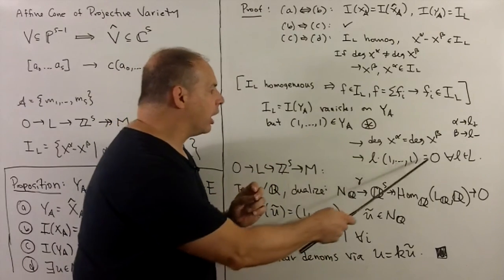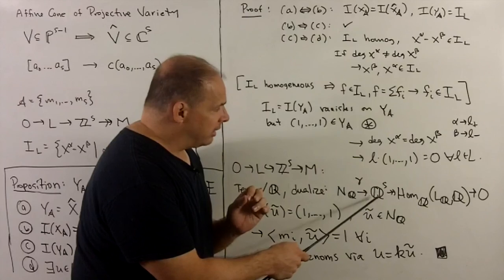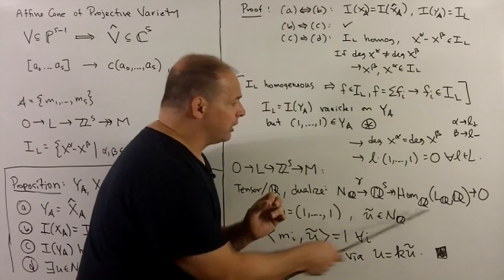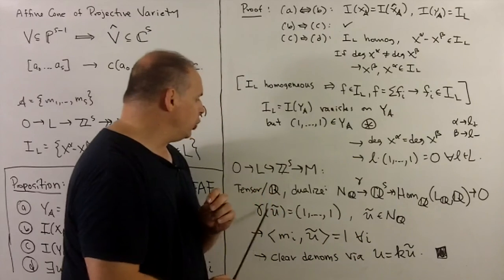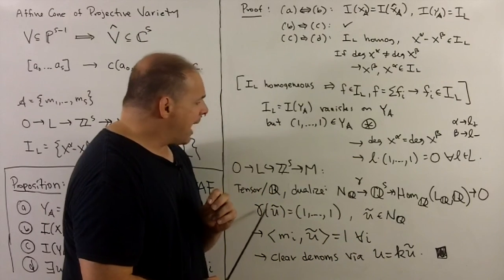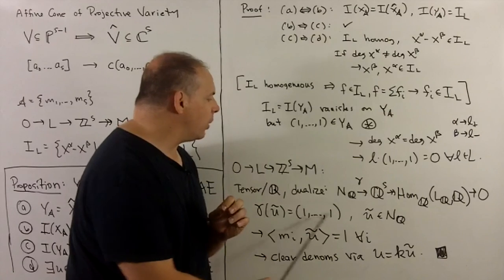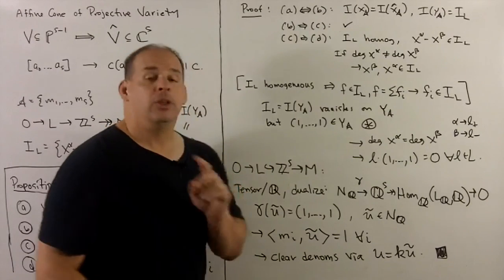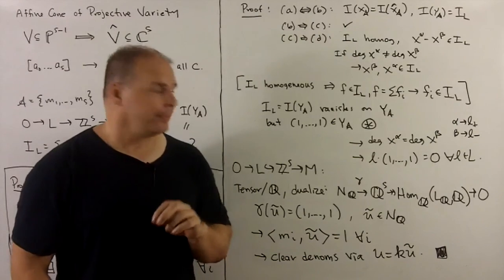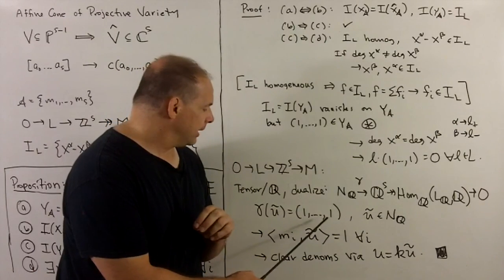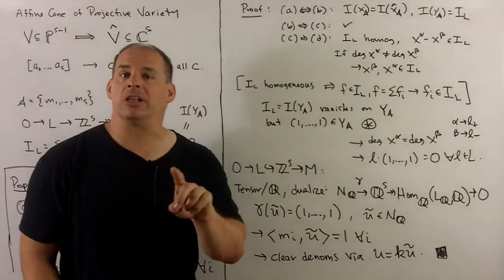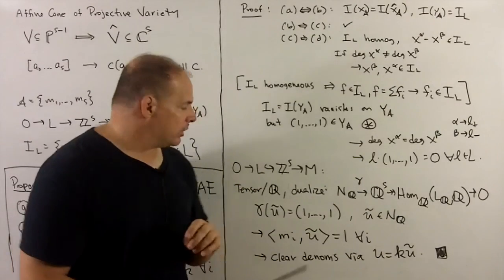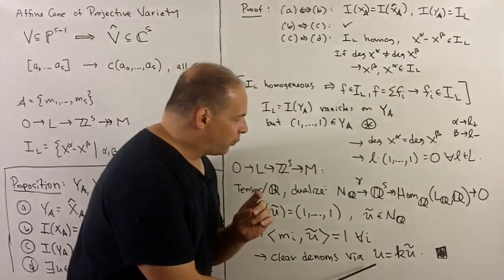That means, by our condition here, (1,1,...,1) is in the kernel going over to there because it goes to zero as a linear functional, which means there's some u tilde which maps onto (1,1,...,1). And then when we decode this, this just says that for each m sub i dotted with the u tilde, we get a 1, that's what the 1s all mean. And so I can multiply u tilde by some integer to clear out all the fractions, all the denominators. And so that's going to give us the condition that we're looking for for u.